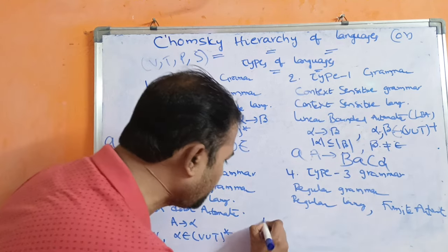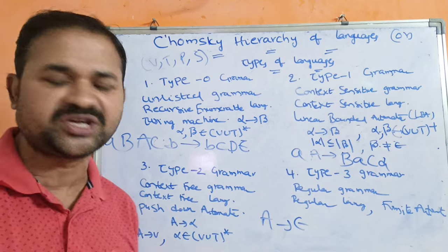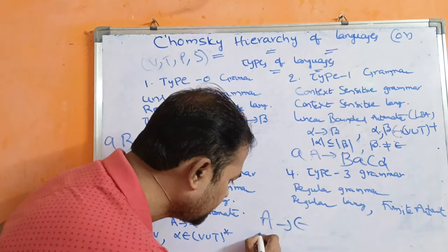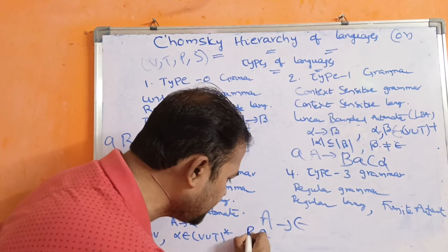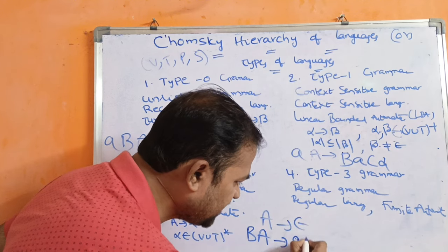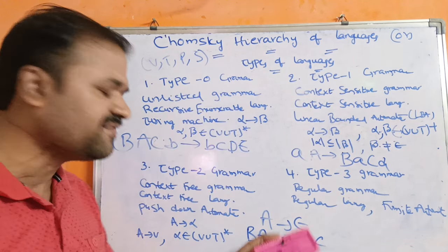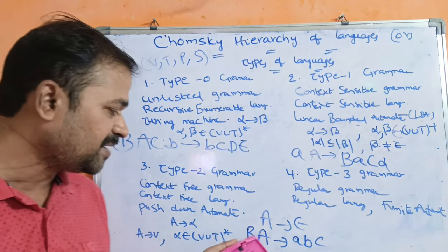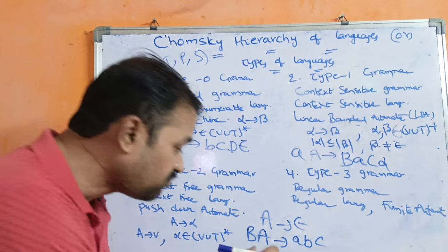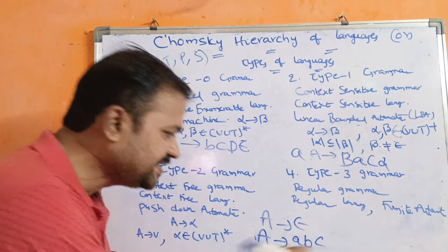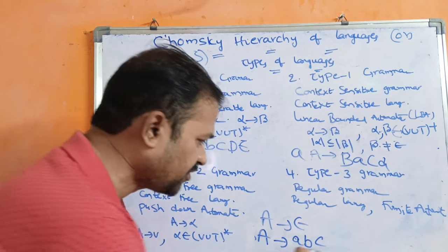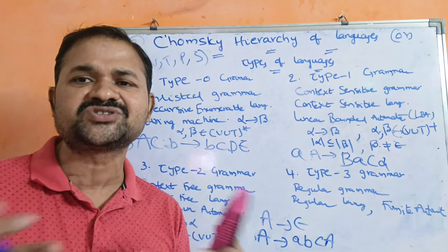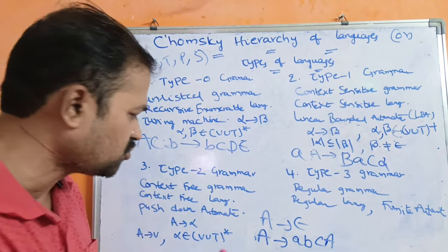Let us take an example. A implies epsilon: this is a valid production, because RHS may contain epsilon in context free grammar. Next, BA implies ABC: is it a valid production? No, because the left hand side should contain only one non-terminal, but here we have two non-terminals — it is not allowed. A implies ABC: is it a valid production? Yes, it is a valid production, because RHS may contain a combination of non-terminals and terminals — there is no problem.